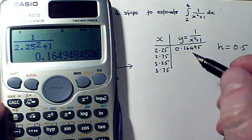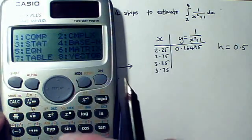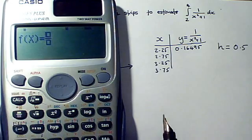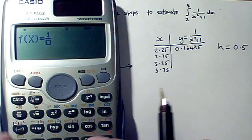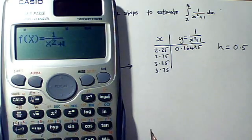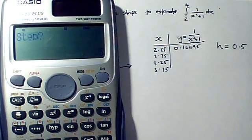Now to save myself doing that calculation tediously often, I can actually use table mode on the calculator. So I can enter the function 1 over x-squared plus 1, and I can start at 2.25 and I can end at 3.75 using a step length of 0.5.